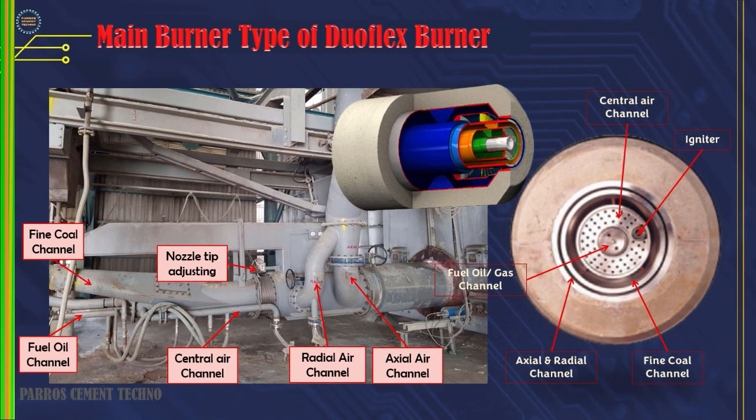This is a Duoflex burner. This type of burner's axial and radial air exits through a single channel, as shown in this burner nozzle image. For the operation of this burner, adjust the axial air valve opening 65 to 70% and the radial or swirl air 30 to 35%. The air pressure from the primary fan during normal operation is between 200 to 240 millibar.